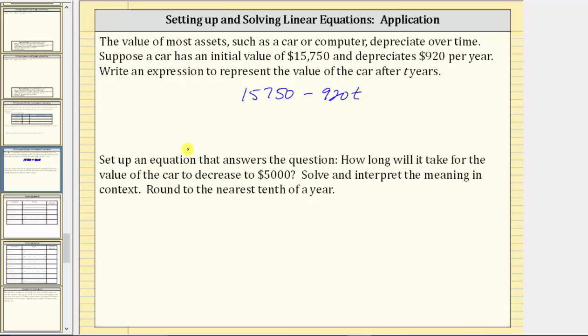Next, set up an equation that answers the question: how long will it take for the value of the car to decrease to $5,000? Solve and interpret the meaning in context, round to the nearest tenth of a year. The equation that will answer this question is the equation formed by setting this expression equal to $5,000, which means the equation is $15,750 minus $920t equals $5,000. And now we will solve the equation for t.